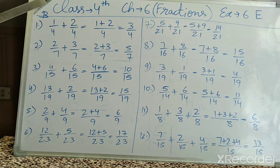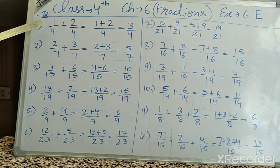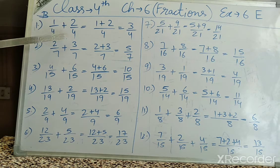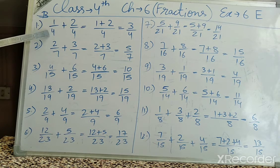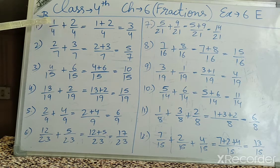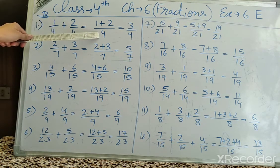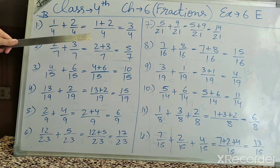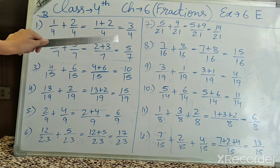One condition here is that the denominator is the same. In higher classes you will see denominators that are different, but if the denominator is the same it is very easy. For example, 1 upon 4 plus 2 upon 4 — denominator same hai — so we write a single denominator below and add the numbers on top.